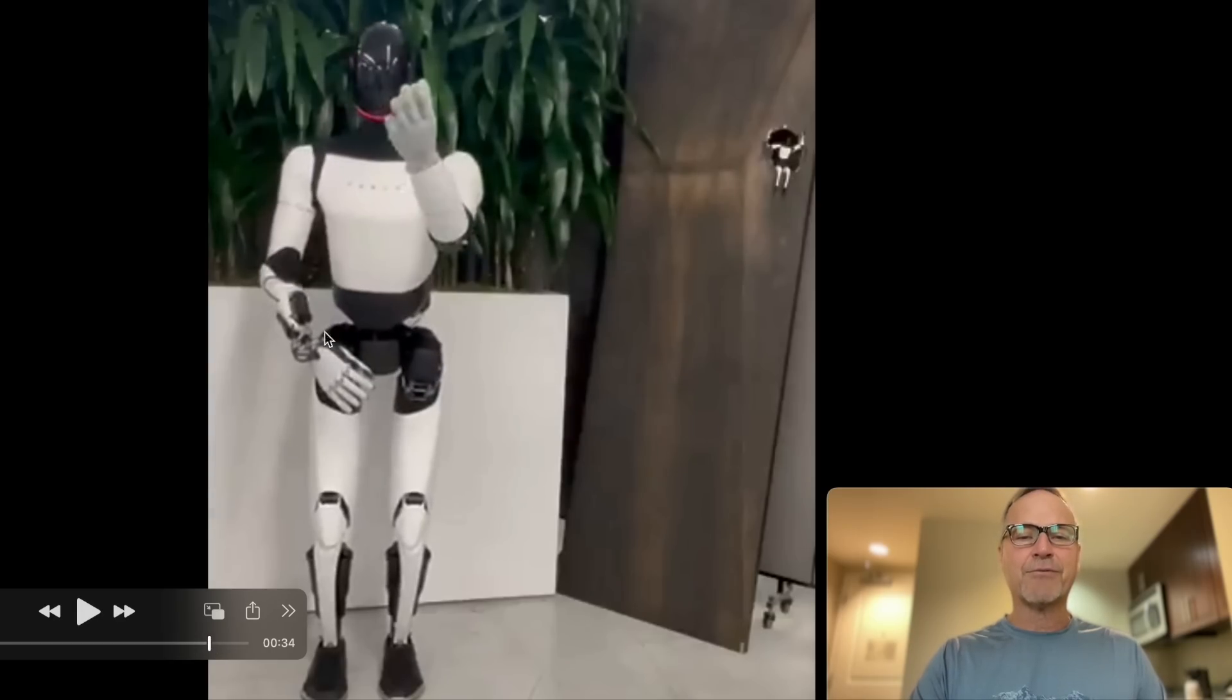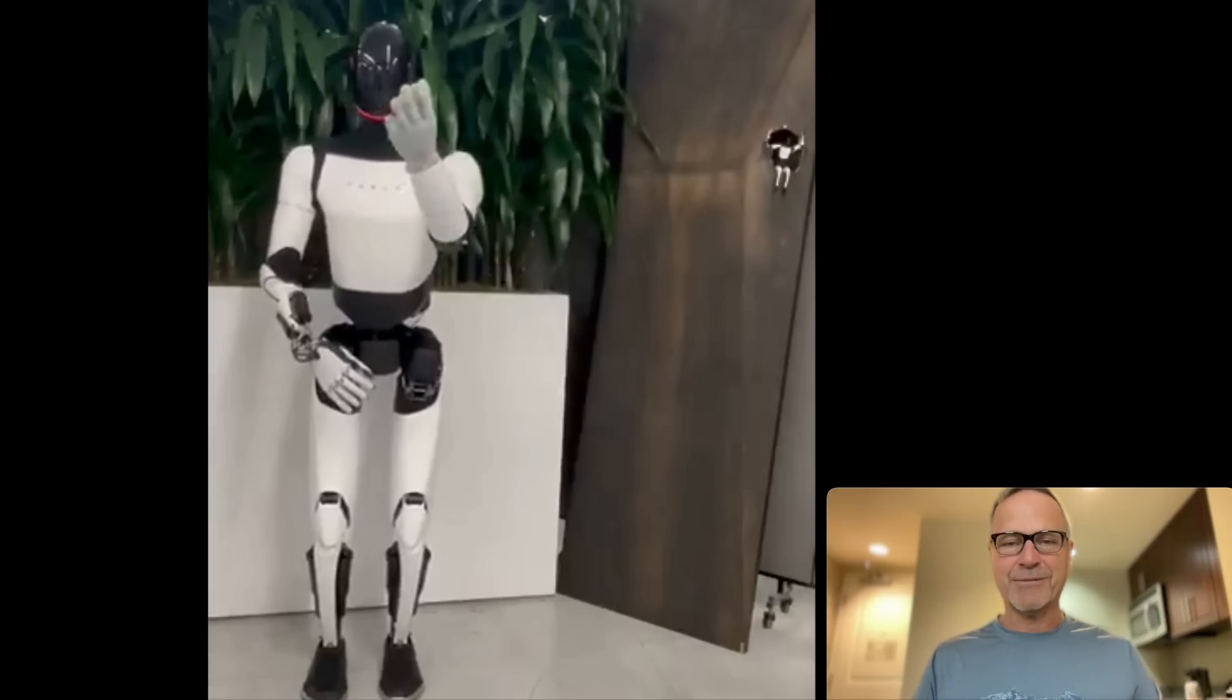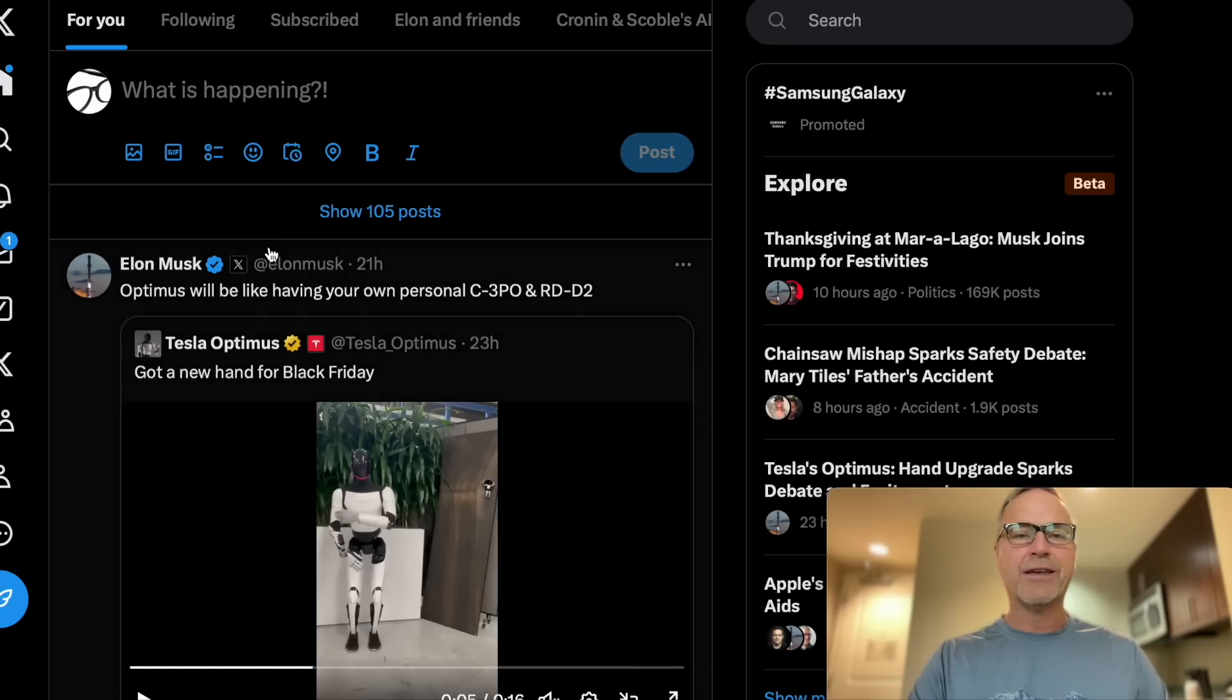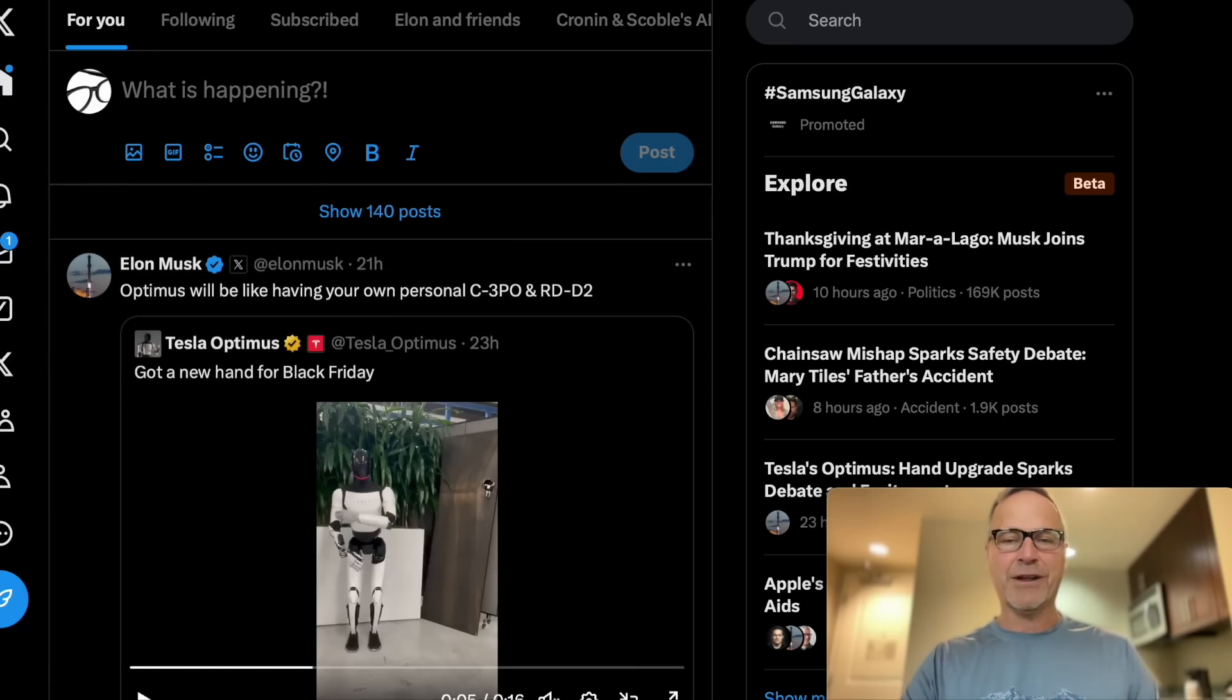Obviously, eventually it will have both hands. It won't be just left-handed. It will have two of these new hands. If you look at the right arm, the right arm is the old arm. This is actually a really useful video, not just for the motion, but also to look at the differentiation between the old arm and the new arm. The new arm is substantially cleaner looking. If we go over to X here, Elon got in on this and said, Optimus will be like having your own personal C-3PO and R2-D2, which is very true.